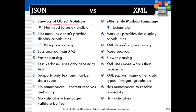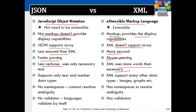A detailed comparison: JSON is JavaScript Object Notation, while XML is Extensible Markup Language. JSON has no markup and does not provide display capabilities, whereas XML also doesn't provide display capabilities by itself but is rendered by the browser. JSON supports arrays; XML does not. JSON is less verbose; XML is more so. JSON parsing is faster; XML is slower. JSON is simpler and uses less text, while XML uses more words than necessary. JSON supports only text and number data types, while XML supports many data types including binary types like images and graphs. JSON has no concept of namespaces — context resolves ambiguity — while XML has namespaces for resolving ambiguity.